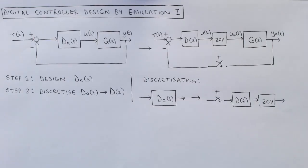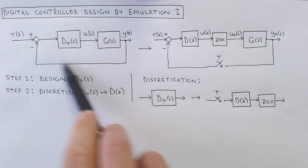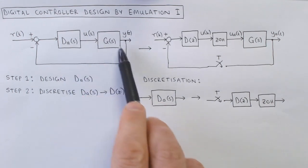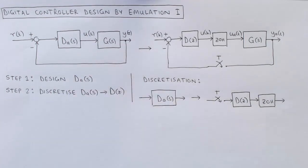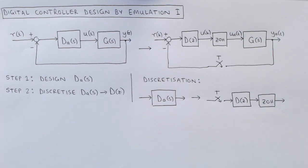This page shows the procedure for digital controller design by emulation. For the first step we assume that the control system is a purely analog control system and we design a suitable continuous time controller to control the continuous time plant. To design the continuous time controller we can use any appropriate controller design techniques such as root locus design or frequency response design. For the second step we discretize the continuous time controller to find a discrete time controller that behaves similarly to the designed continuous time controller.